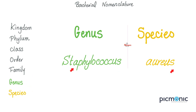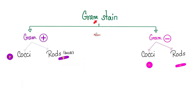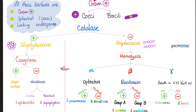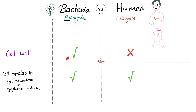When I say staph aureus, staph is the genus and aureus is the species. Staph aureus is a gram-positive coccus. Staphylococcus aureus are gram-positive cocci that are catalase-positive and coagulase-positive. They are spherical and lack endospores. Bacteria have both a cell wall and a cell membrane; humans do not have a cell wall but do have cell membranes — prokaryote versus eukaryote.